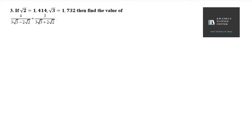Hello everyone, let's start with question number 3 of exercise 1.4. So it says, if √2 = 1.414 and √3 = 1.732, then find the value of 4/(3√3 - 2√2) + 3/(3√3 + 2√2).